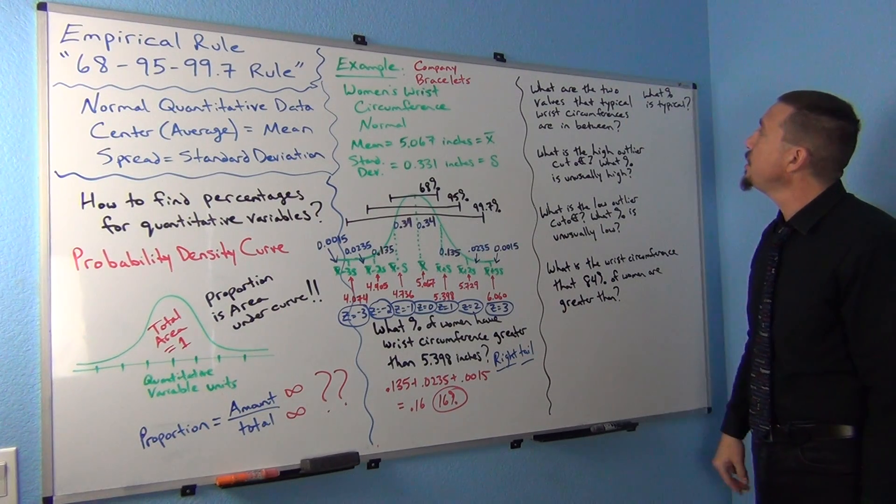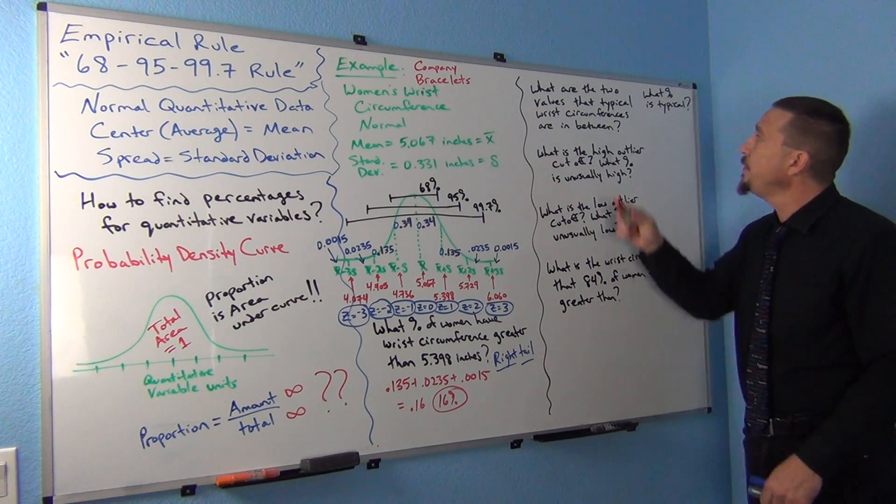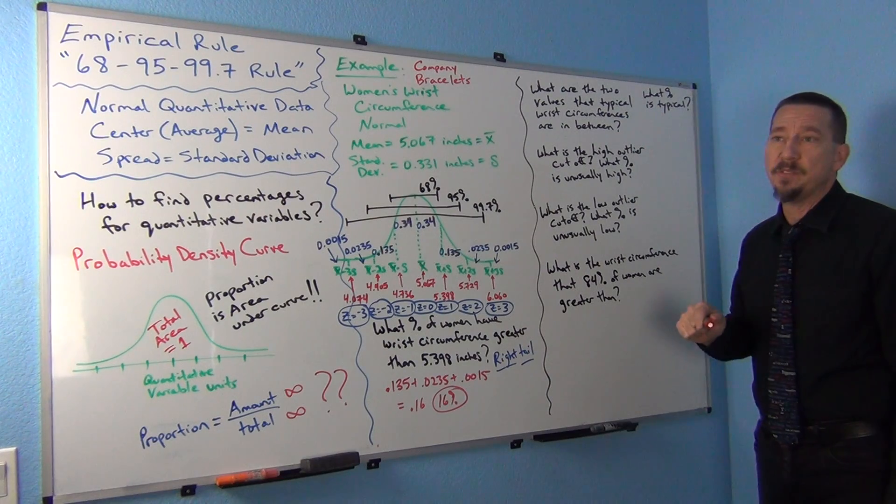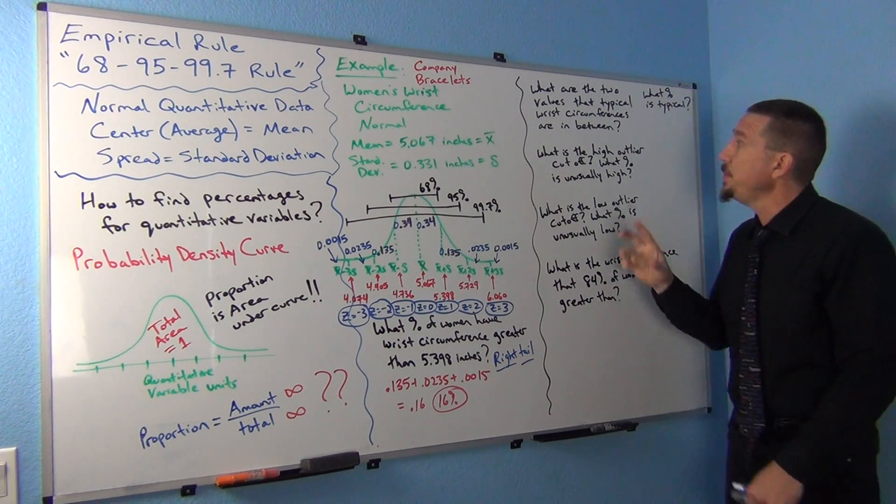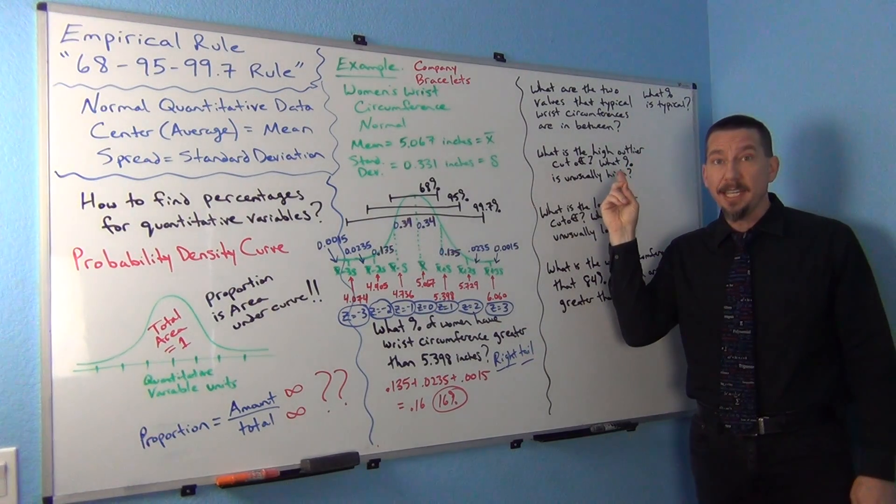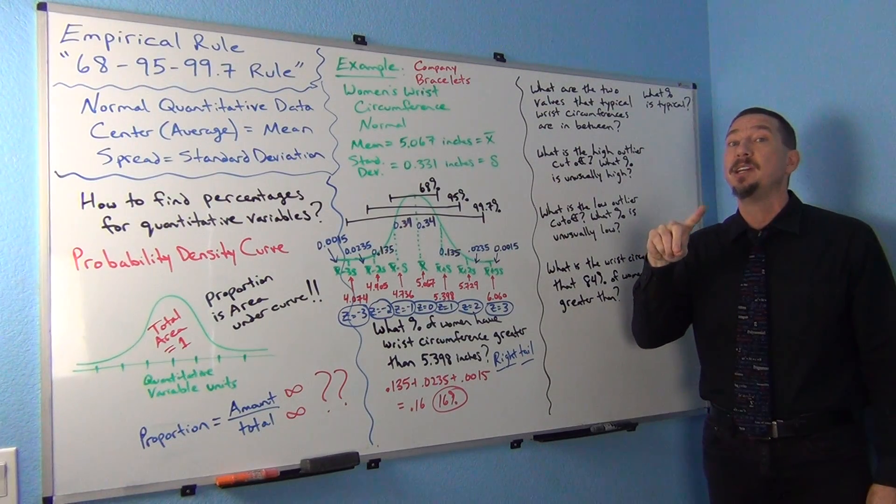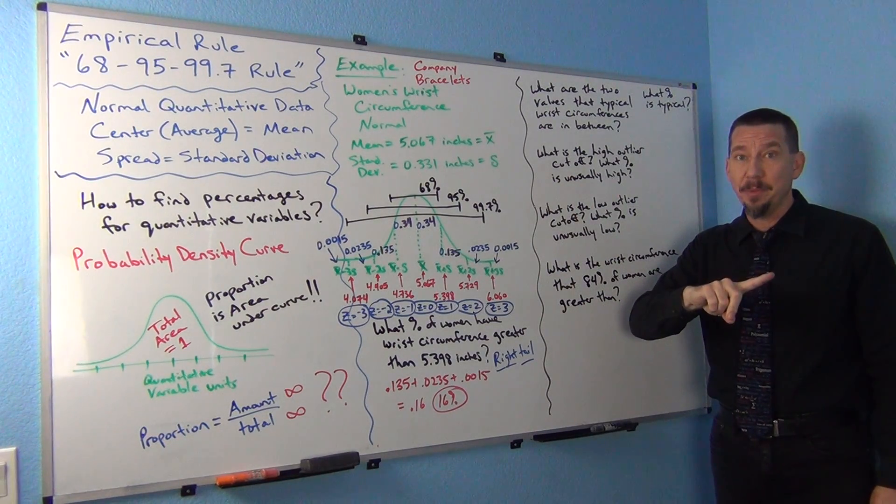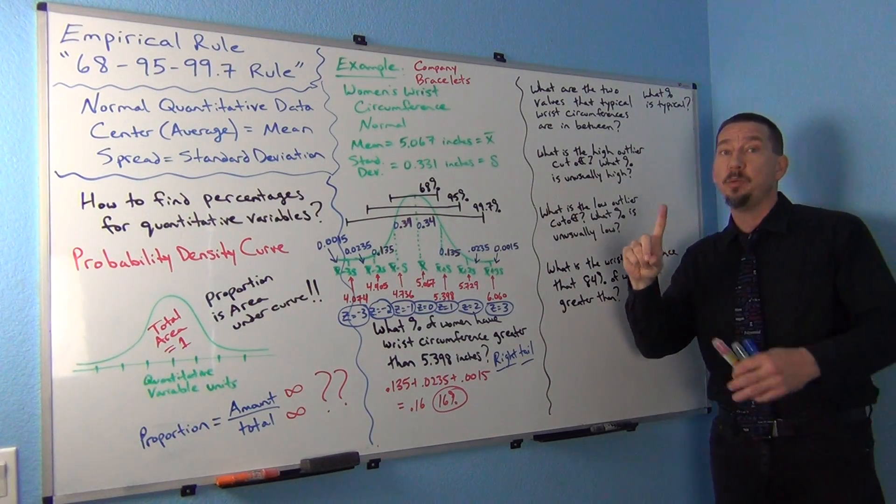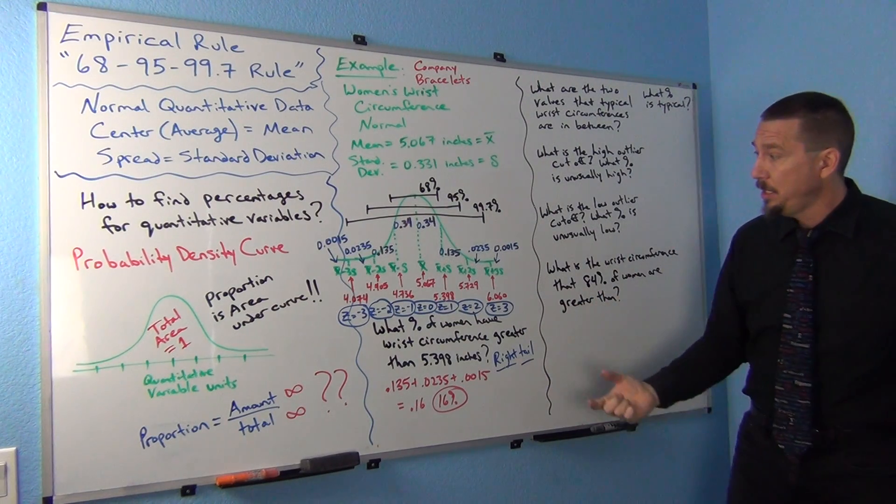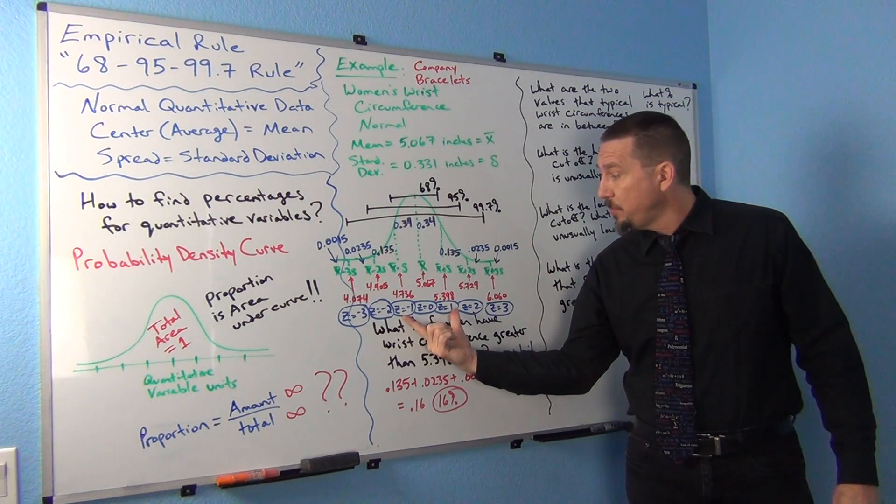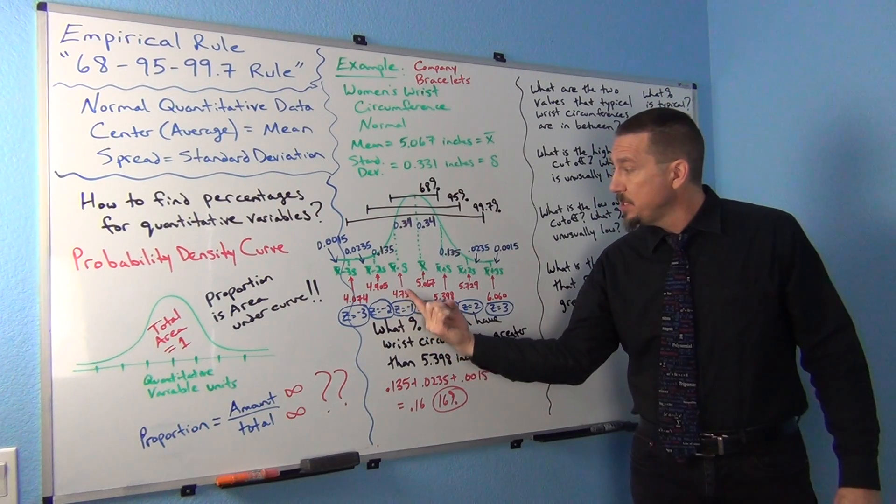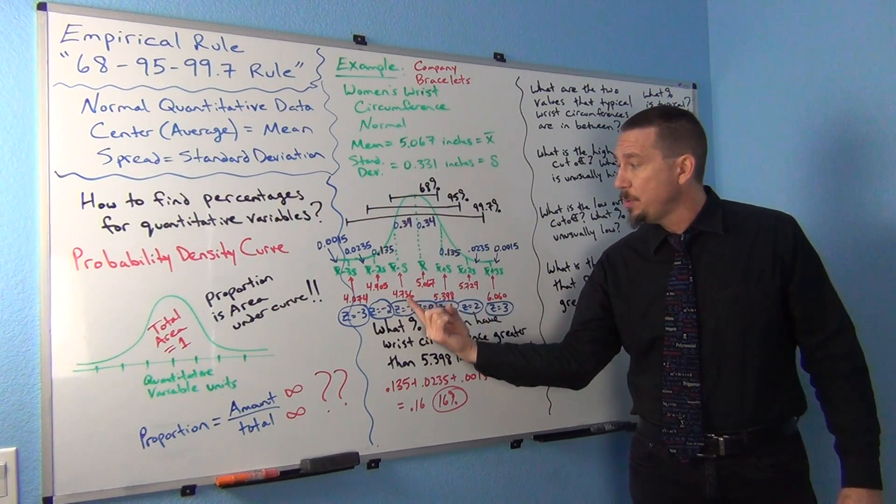What about two values that typical wrist circumferences fall in between? If you remember when we studied normal data, typical values are within one standard deviation from the mean, so a z-score between negative 1 and 1. If you look at the z-score of negative 1 and z-score of 1, these are the wrist circumferences that go with that.